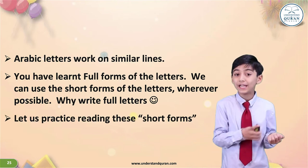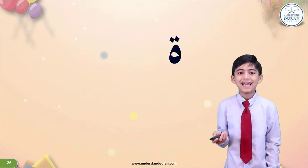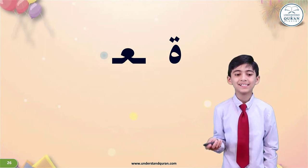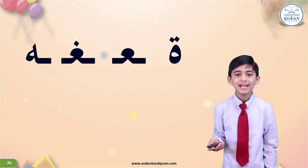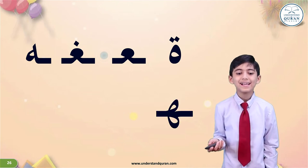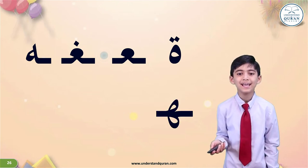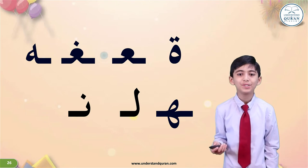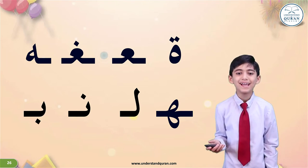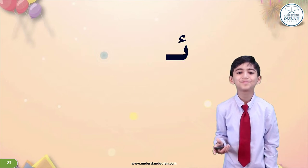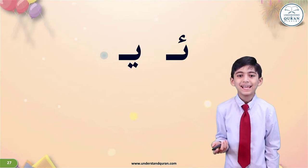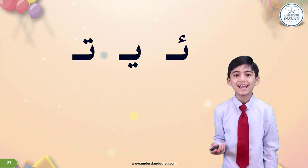Anyway, let's practice reading these short forms: tha, tha, tha, tha, عين, غين, ها, لام, نون, با, همزة, يا, تا.